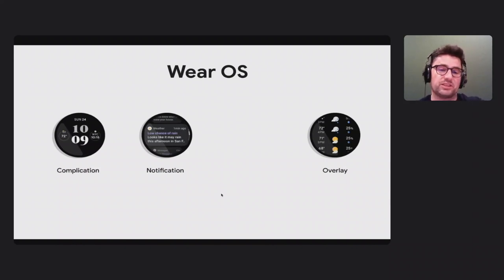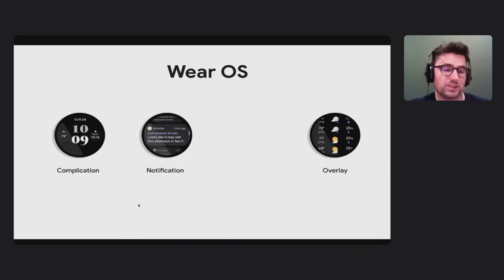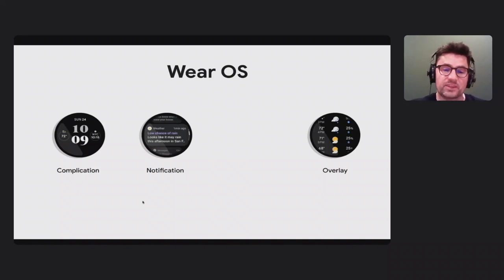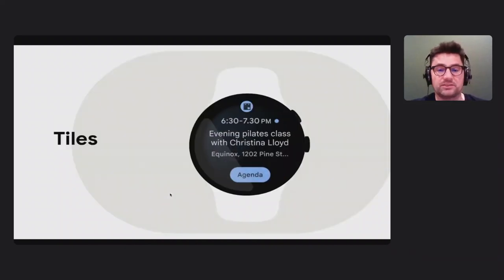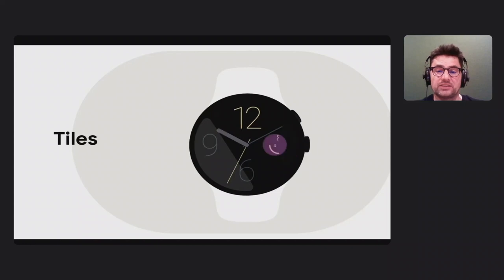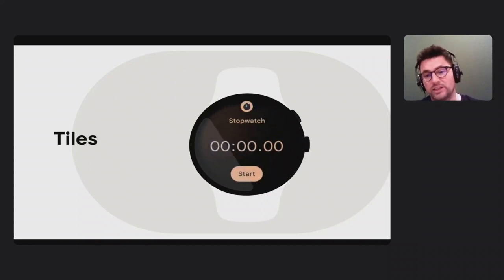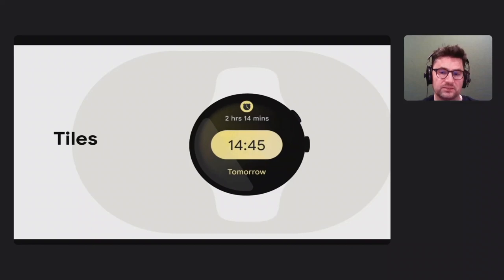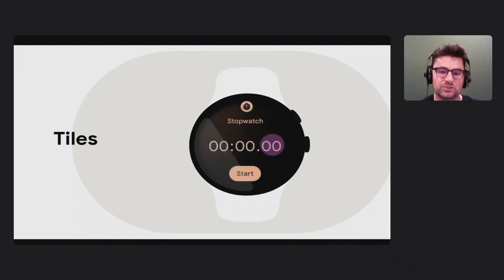On Wear OS it's the same — you have notifications just like mobile. You also have something called overlays, which is similar to an app activity and provides a deeper experience, but we only want you to have a couple of user journeys, each self-contained in a vertical activity. You also have complications: the main home screen for a watch is the watch face, and your app can provide extra data points called complications around it. For example, a weather app could provide a weather complication. Then you have tiles — full-screen, glanceable experiences accessed by swiping from the watch face.